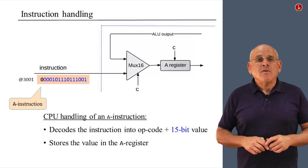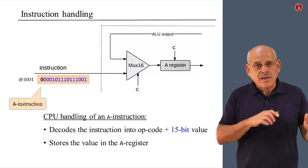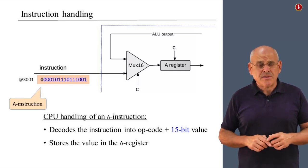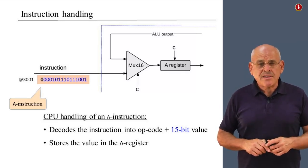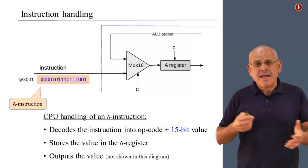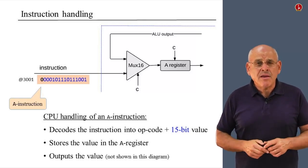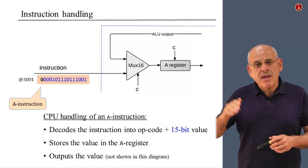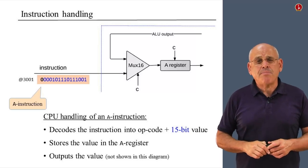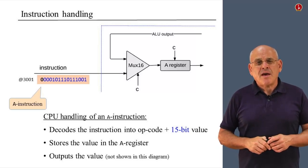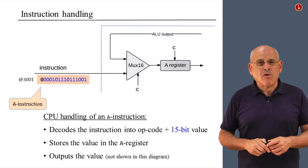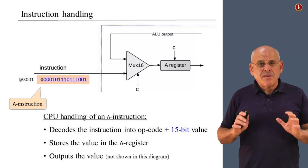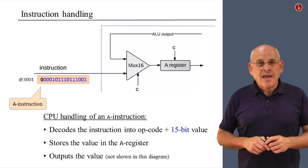The CPU says: I have to take the next 15-bit value and put it inside the A register. Notice that this is exactly what the gate diagram does — the 16-bit values go through and into the register. Additionally, the CPU takes the output of the A register and emits it outside the CPU via the output called addressM. That is how the CPU handles an A instruction.